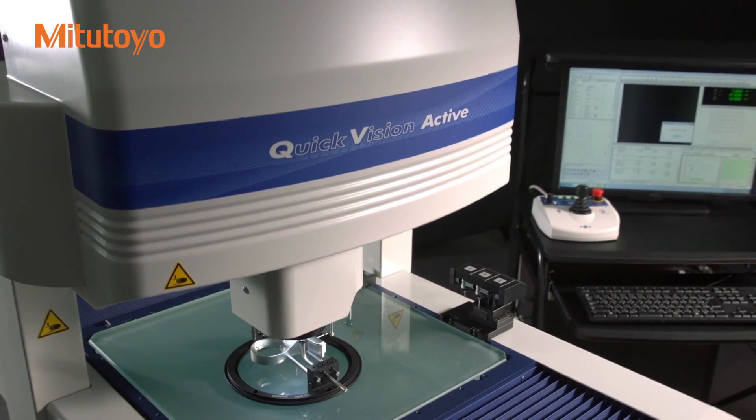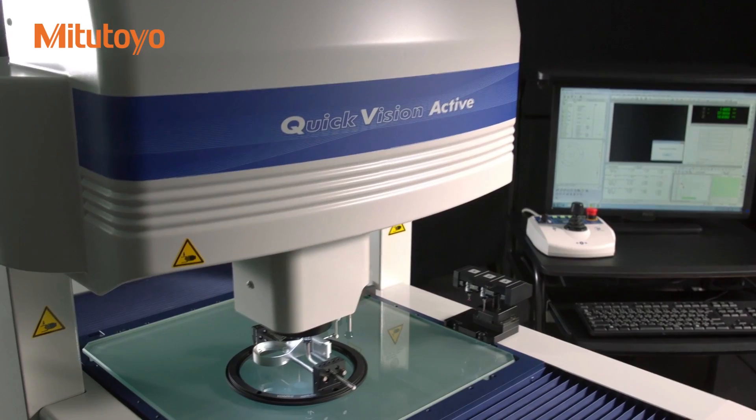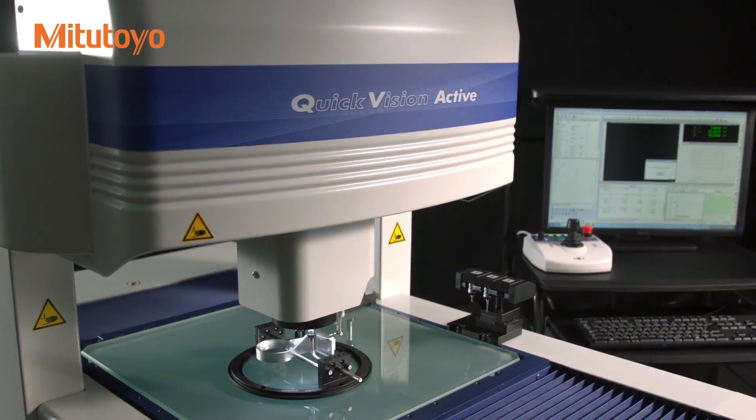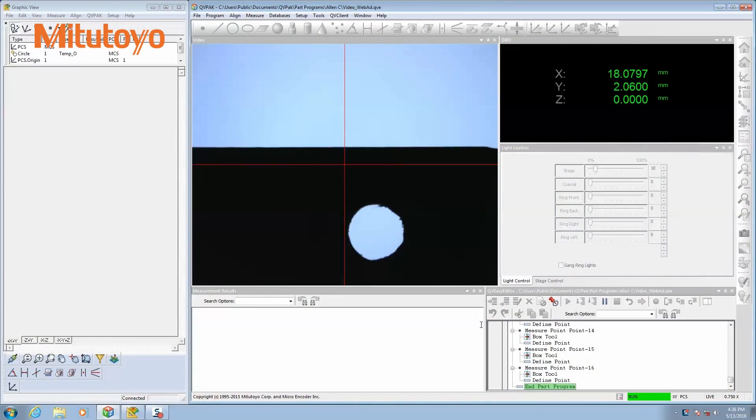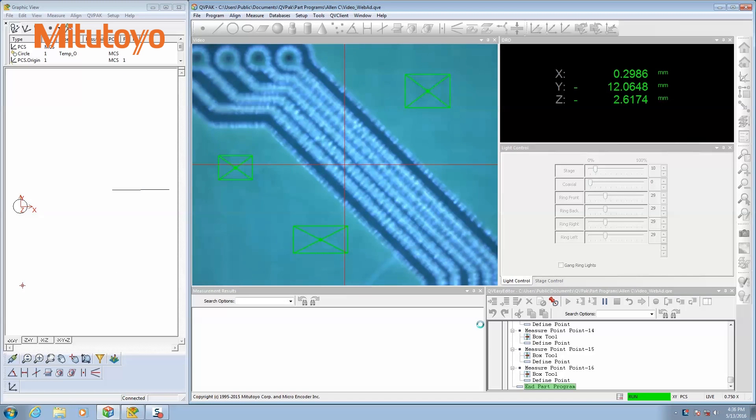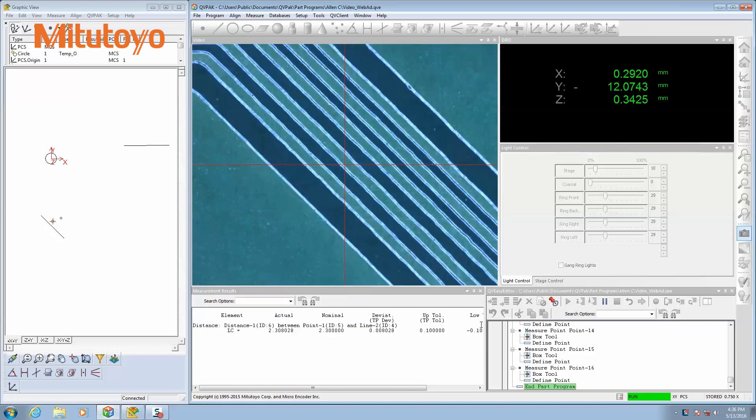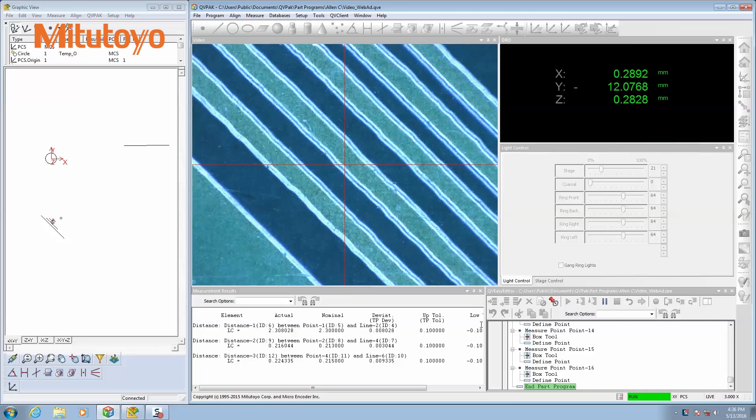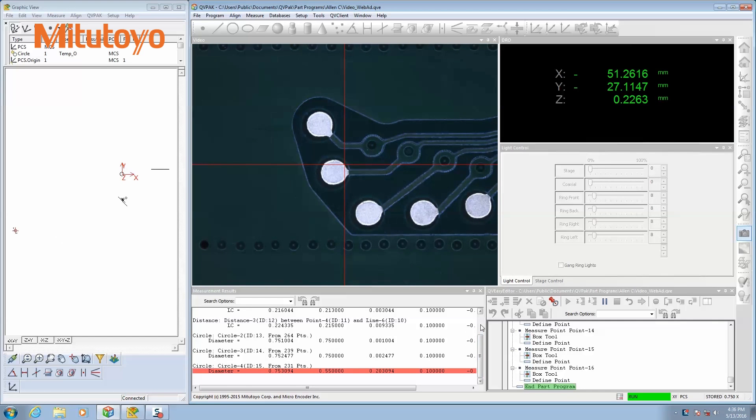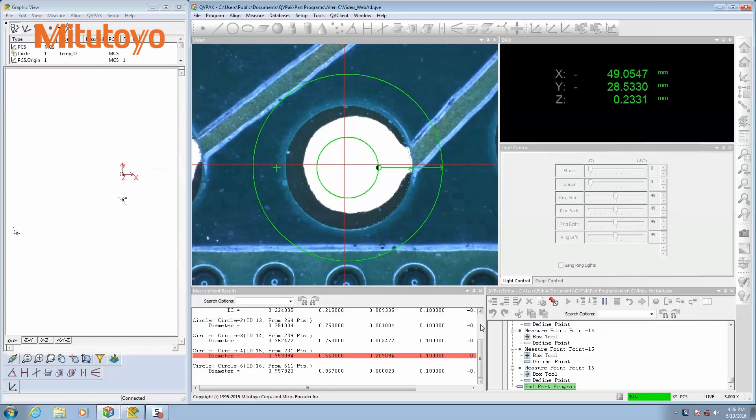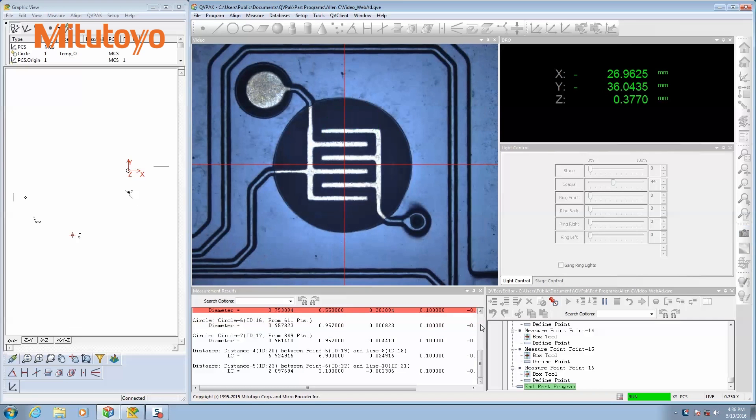The footprint has been reduced up to 30% compared to other models in the Vision lineup. QV Active is equipped with Mitutoyo's powerful QVPAK software. This software has been updated with ease of use in mind. QVPAK offers unprecedented flexibility to meet today's challenges, as well as tomorrow's demands.